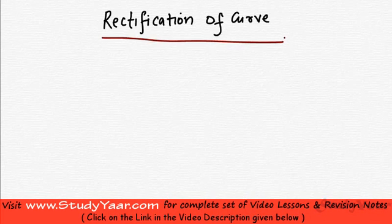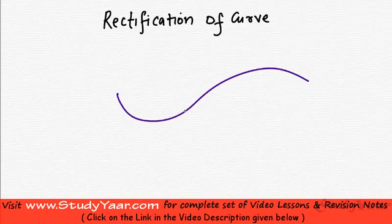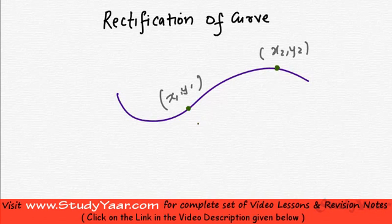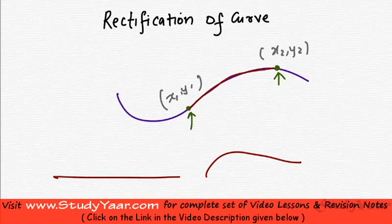Let's learn about rectification of curves. To rectify a curve basically means to find the length of the arc of a curve between two points. So if I have (x1, y1) over here and (x2, y2) over here, then to rectify this curve between these two points basically means to find the length of this arc. So if this is your arc and if you flatten it out, you will have a certain length — we want to find out what that length is between these two points.